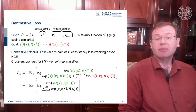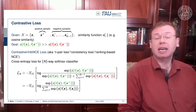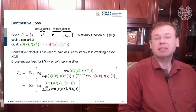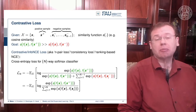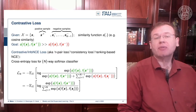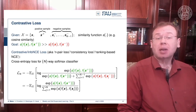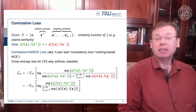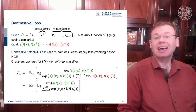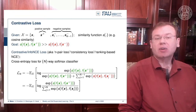We can build this contrastive loss and all that we need is the current sample x, some positive sample x-plus, and then negative samples that are all from a different class. In addition, we need a similarity function s — this could for example be a cosine similarity or a trainable similarity function — and we apply our network f on x and compute the similarity. The goal is to have a higher similarity between the positive sample and the sample under consideration than all the negative ones.